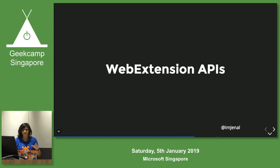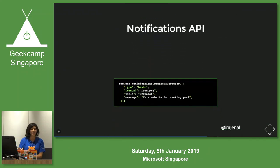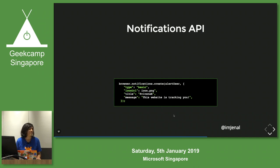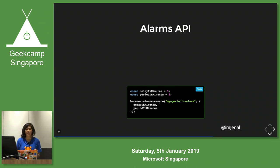There are several Web Extensions APIs: Notifications API, Alarm API, Bookmarks API, Tabs, Storage, and Web Request. The Notifications API alerts the user with a specific message or title. For the Alarm API, whenever you want a particular thing to trigger after a certain period of time, you use the Alarm API. This example shows a periodic alarm that triggers every two minutes, starting at the first five minutes after installation.